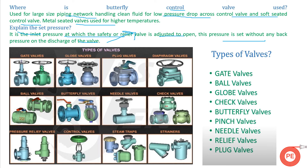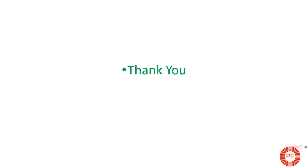Different types of valves — which can also be a basic interview question — include: gate valves (used for on/off), globe valves (used for on/off and control service), plug valves, diaphragm valves, ball valves, butterfly valves, needle valves, check valves, pressure relief valves, control valves, steam traps, and strainers. These are the basic types of valves used in different processes to control our systems.